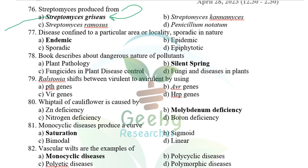A disease confined to a particular area or locality is endemic; sporadic means it occurs rarely; epidemic is otherwise called epipoletic. The answer for 'confined to a particular area or locality' is endemic — example: potato wart (Synchytrium endobioticum). The book that describes the dangerous nature of pollutants is 'Silent Spring' by Rachel Carson, released September 27, 1962.